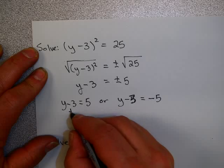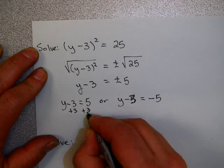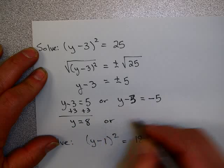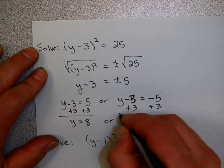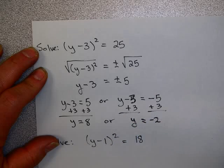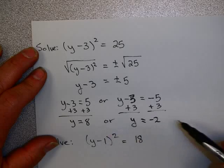Now, to solve each of these, just solve them separately. Here, I would add 3 to each side. And here, I would add 3 to each side. And my solution is 8 or negative 2.